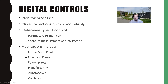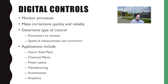At the Nucor steel plant — remember those pictures I showed you — the plant is all digitally controlled. Sitting at the control desk, all they're seeing is a computer monitor. All of these are digital controls connected through a digital system. This is also used a lot in chemical manufacturing, power plants, automotive manufacturing, and airplane manufacturing.